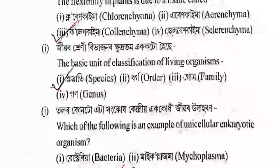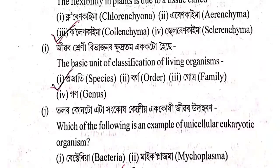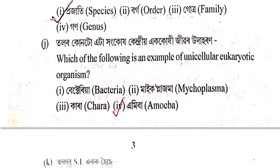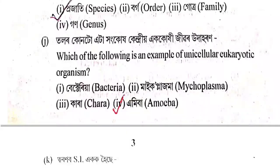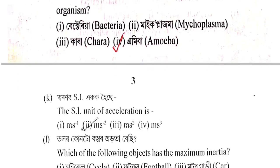Next question: Zibor sreni vibhajan-or hudhah utar — the correct answer is option 1, species. Next question: Which of the following is an example of a unicellular eukaryotic organism? Option 1: bacteria; option 2: mycoplasma; option 3: karra; option 4: amoeba. The correct answer is amoeba.